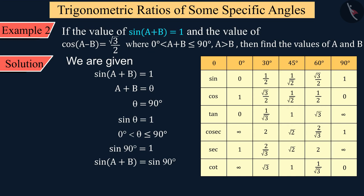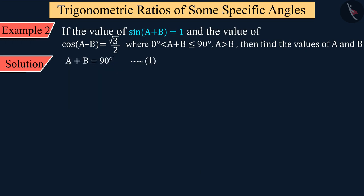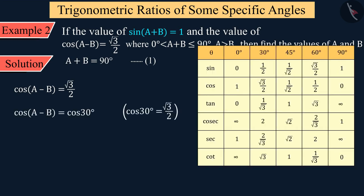Comparing both sides, we get A + B = 90°, shown as equation 1. Similarly, for cos(A − B) = √3/2, using the table, the value of A − B is obtained as 30°, shown as equation 2.